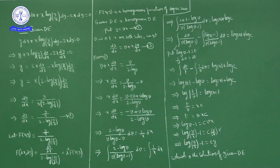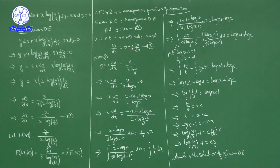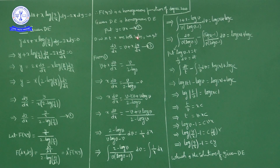To solve this differential equation, we substitute y equals vx. Differentiating with respect to x on both sides using the product rule, dy/dx equals v plus x into dv/dx. Now we substitute equations 2 and 3 into equation 1.